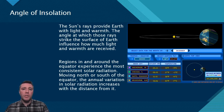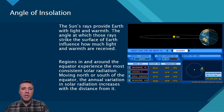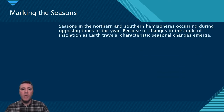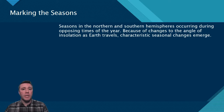Traveling to regions north or south of the equator, greater seasonal variation in light and temperature is experienced farther away from the equator. Seasonal changes in the northern and southern hemispheres are offset from one another — when it's summer in one hemisphere, it's winter in the other.